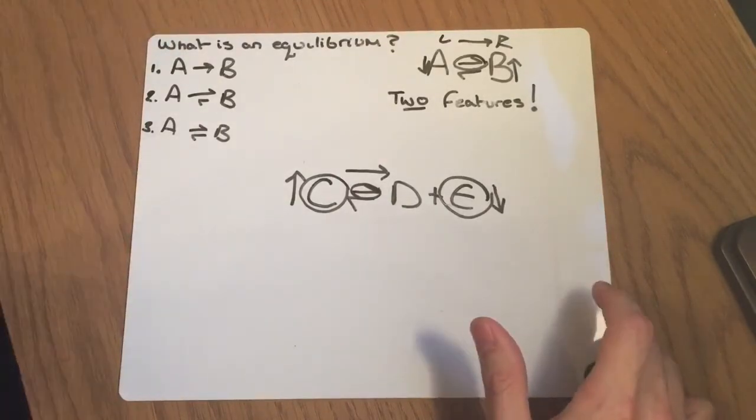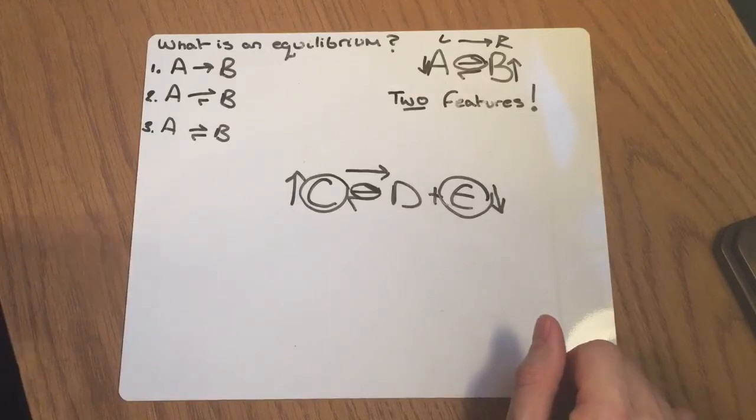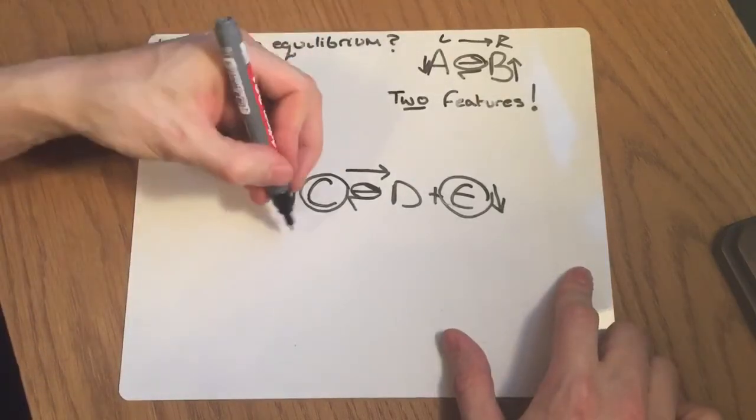There's two other things that can affect the position of an equilibrium. These are temperature and pressure that you need to be aware of at AS level. One thing that is used to increase the rate of a chemical reaction, but doesn't affect the position of an equilibrium, is a catalyst.